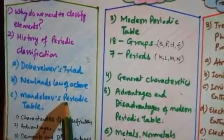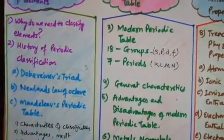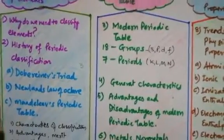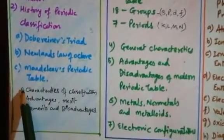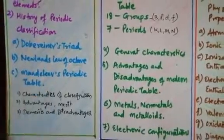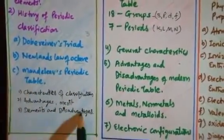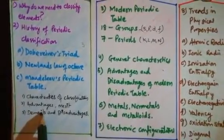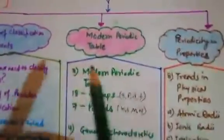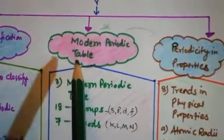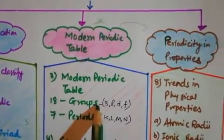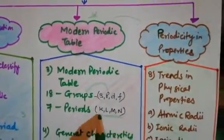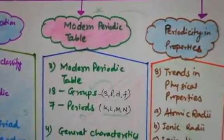Third is Mendeleev's periodic table. Dmitri Mendeleev was the most famous scientist, known as the father of the modern periodic table, because his contribution was remarkable. We will discuss the characteristics, advantages, and merits and demerits of all three classifications. Then the drawbacks of Mendeleev's table were resolved in the modern periodic table. A special concept is groups and periods: there are 18 groups and 7 periods. Groups are made up of s, p, d, f orbitals studied in the previous chapter, and periods are made by K, L, M, N Bohr's energy shells.